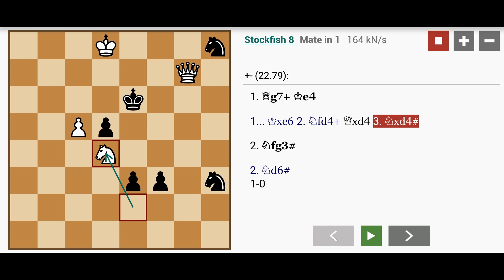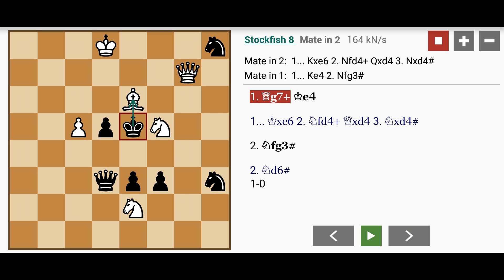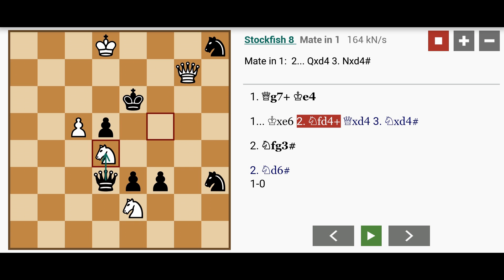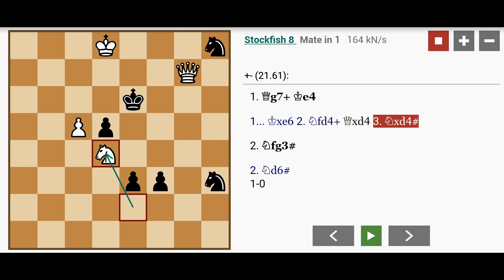So again, we have queen to g7 check. King captures bishop. Knight to d4 check. Queen captures knight. Knight captures queen. And checkmate.